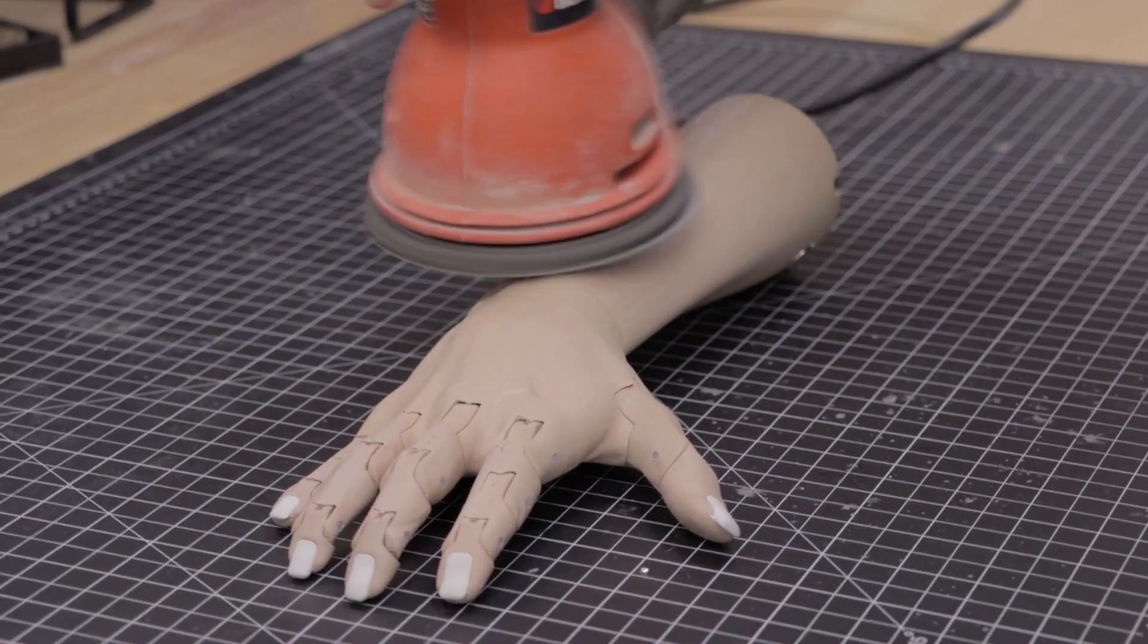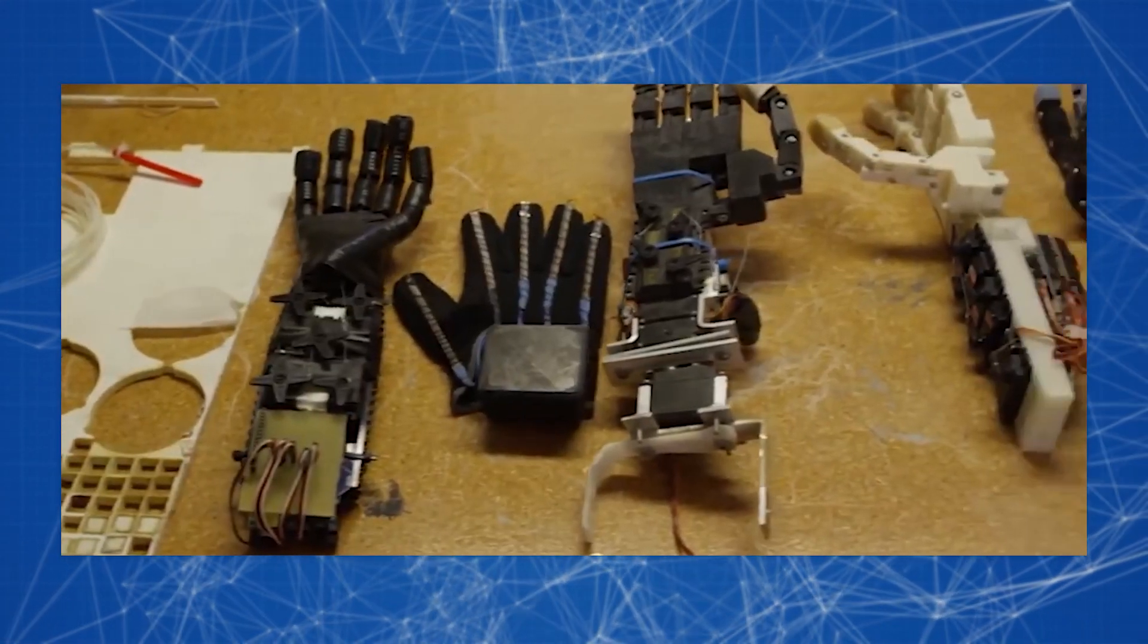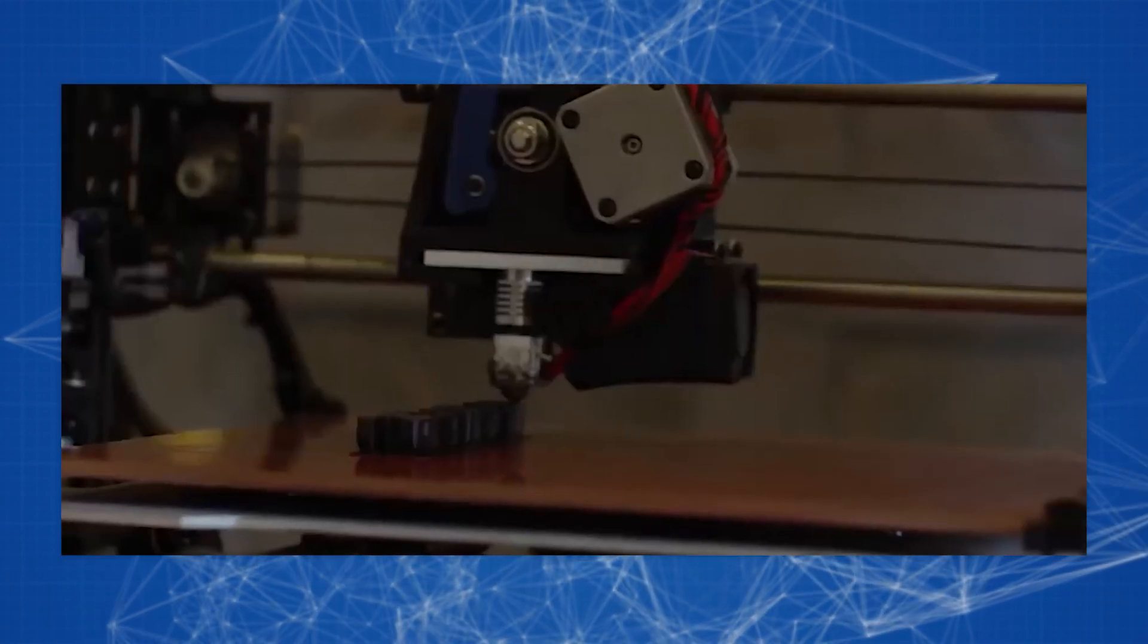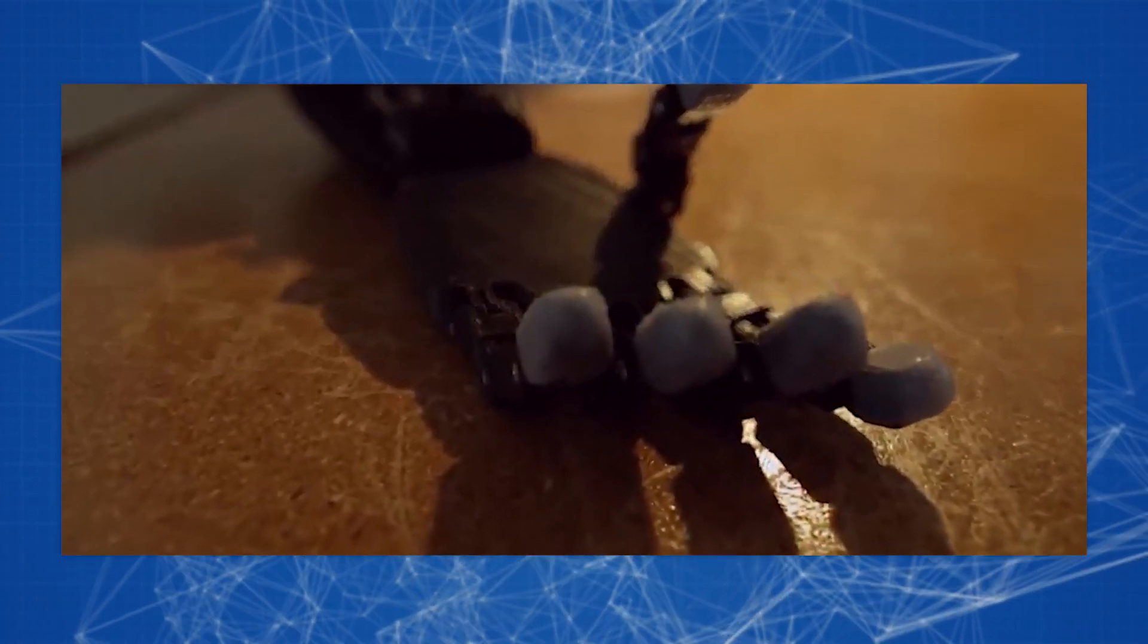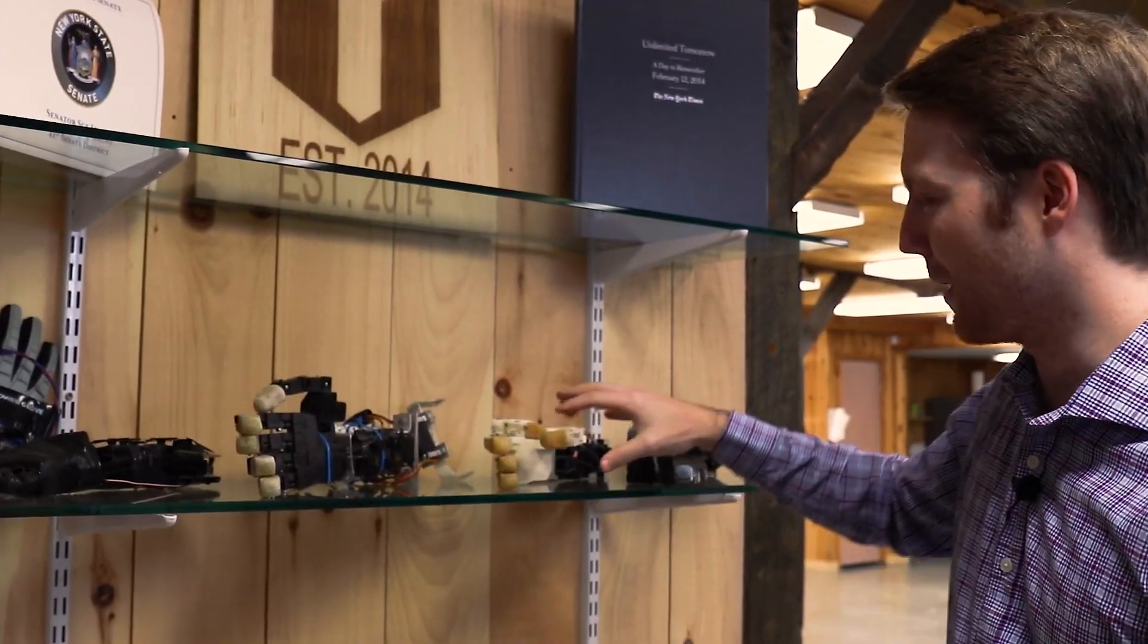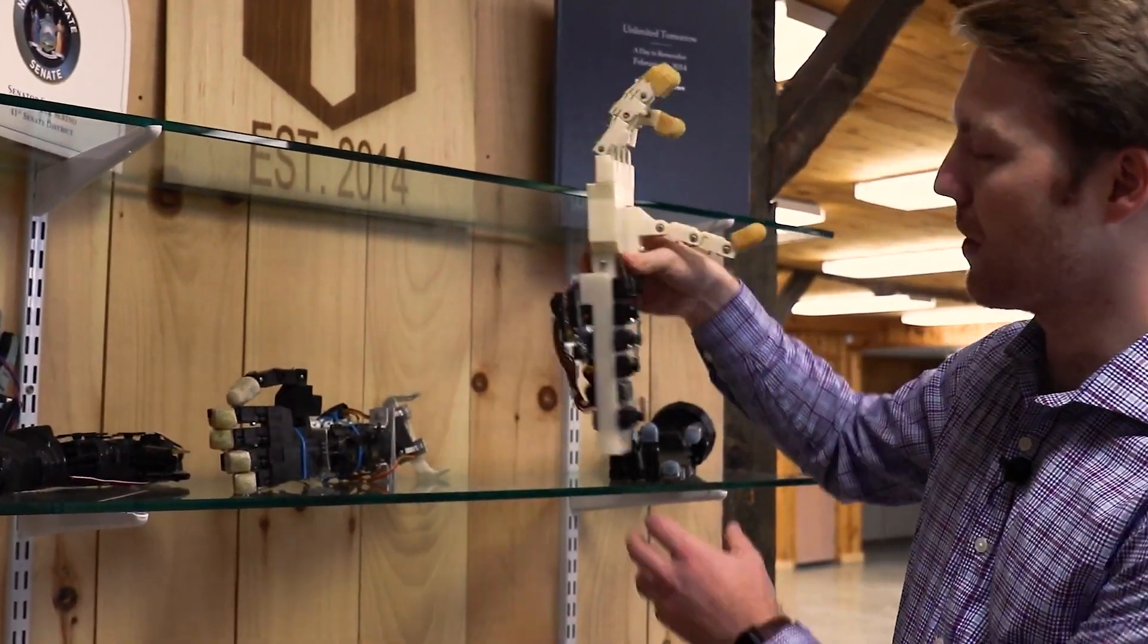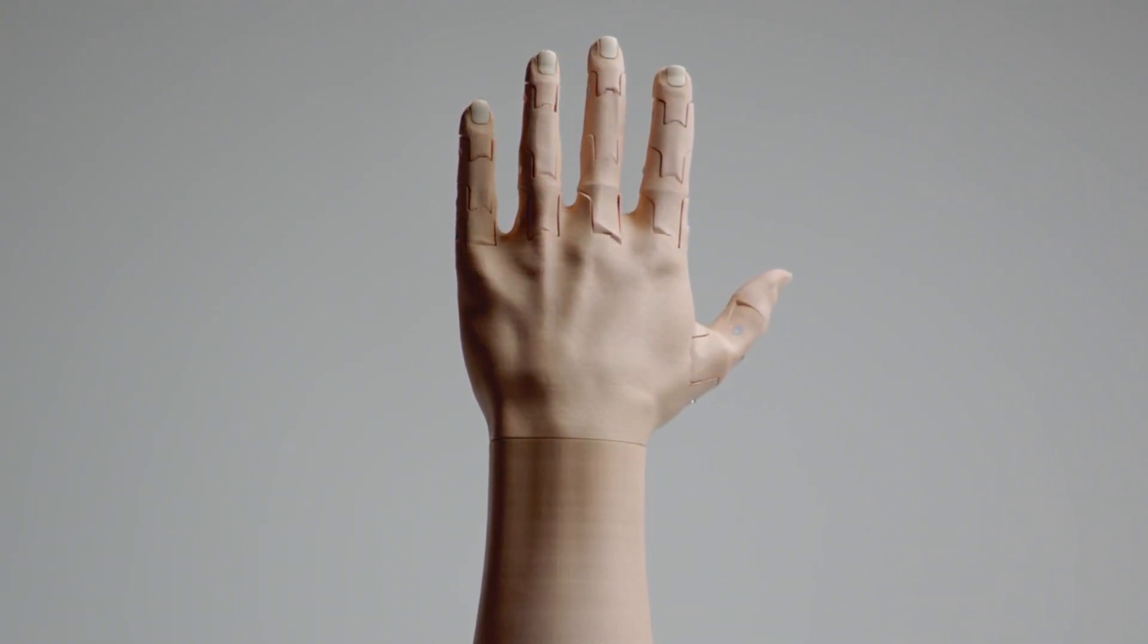In terms of functional characteristics, the TrueLimb prosthesis is not inferior to its expensive analogs, but due to 3D printing and the absence of unnecessary links in the production chain, such as prosthetists, third-party suppliers, and developers, such a prosthesis is 5 to 10 times cheaper than models of a similar level. The bionic arm designed by the Colorado genius has many convenient features that were previously only used in fabulously expensive models.